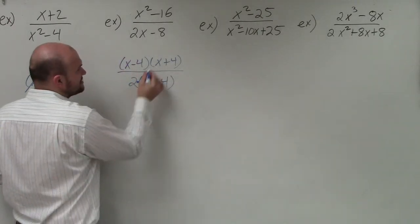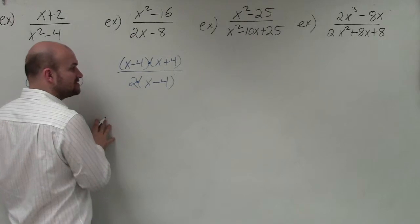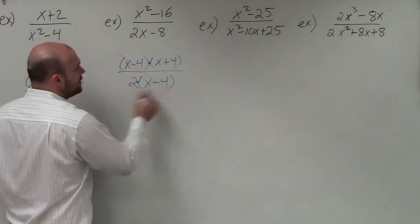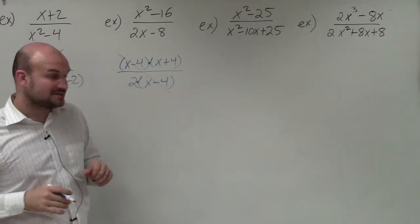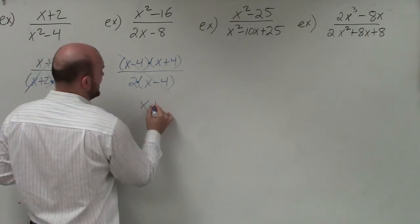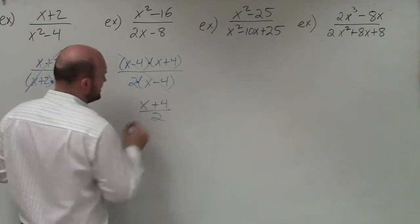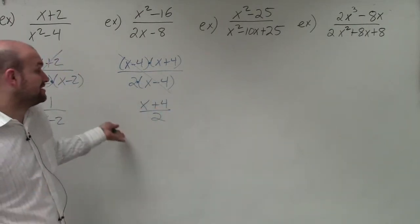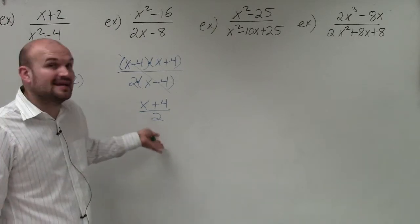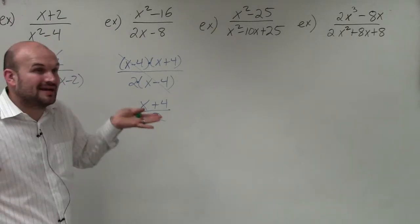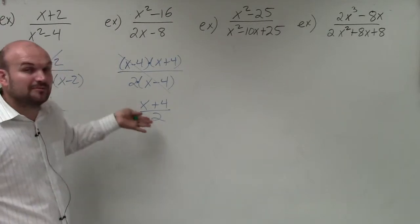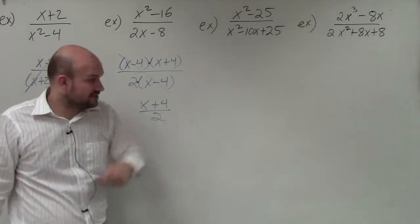Again, making sure that we notice that our terms, our expressions, are separated by multiplication. I can now divide out the x minus 4's and, therefore, I'm left with x plus 4 divided by 2. And then I don't need a constraint here because I know 2 is not equal to 0. And that would be my only constraint is if I had a variable in there, I'd just have to say that it cannot equal 0.